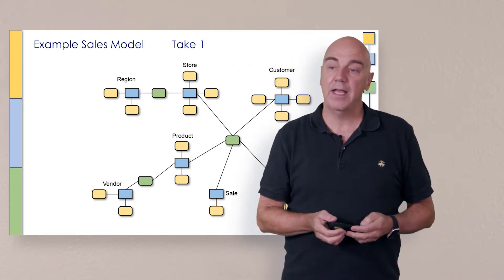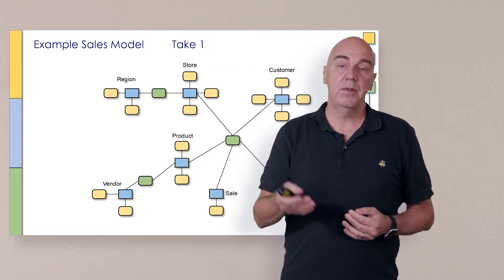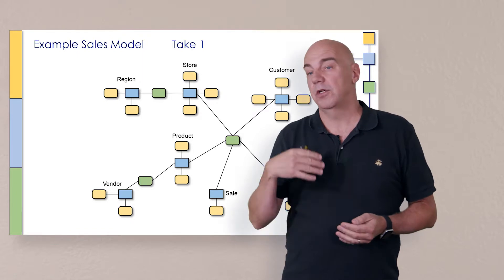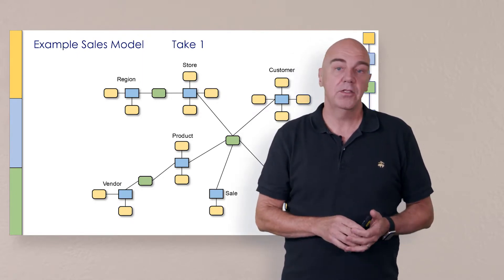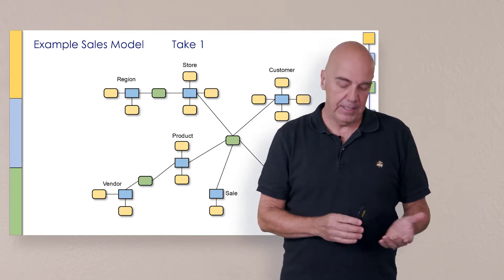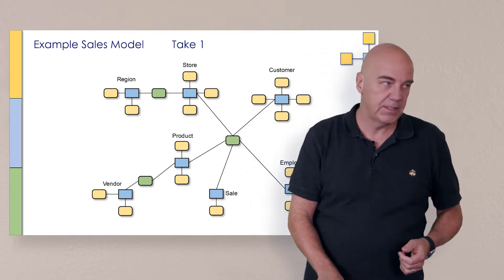And in this case, what's going to happen is for every time we have a new product on the sale, we're going to repeat all that other information, the header level information. So we really want to consider a different answer. Why don't we go back to the board and take a look at that?